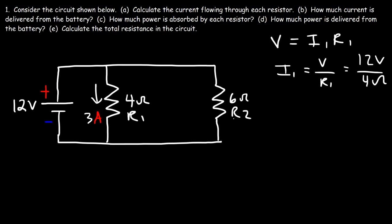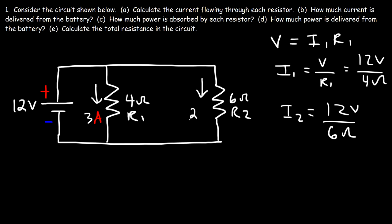So that's I1. Now to calculate I2, it's going to be the voltage of the battery divided by R2, which is 6 ohms. So the current flowing through this resistor is 2 amps — 12 divided by 6 is 2.